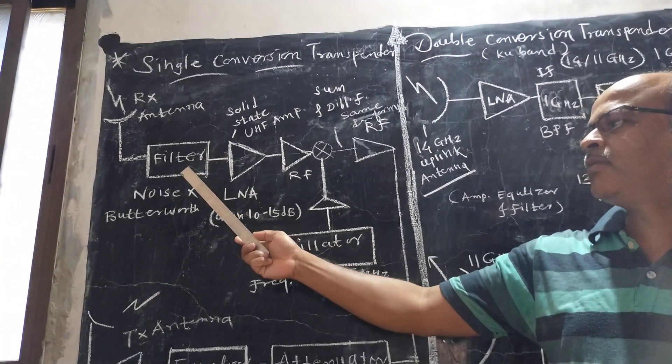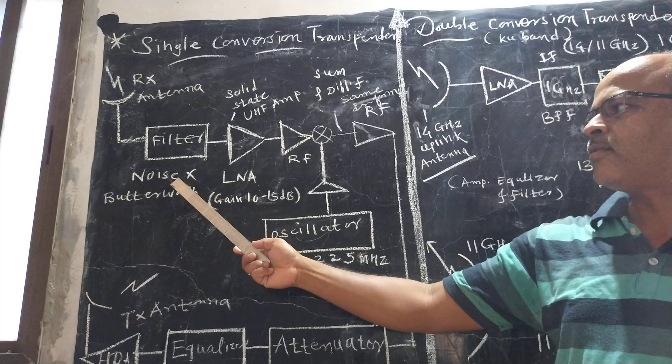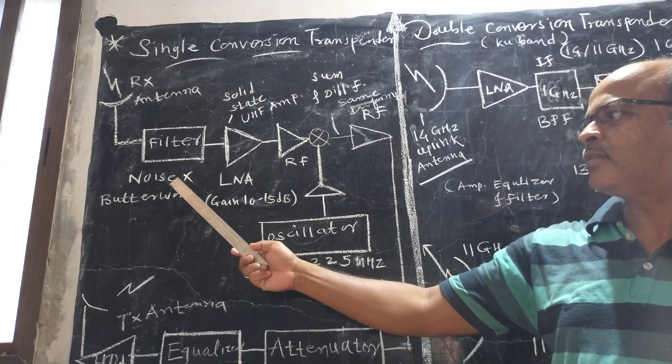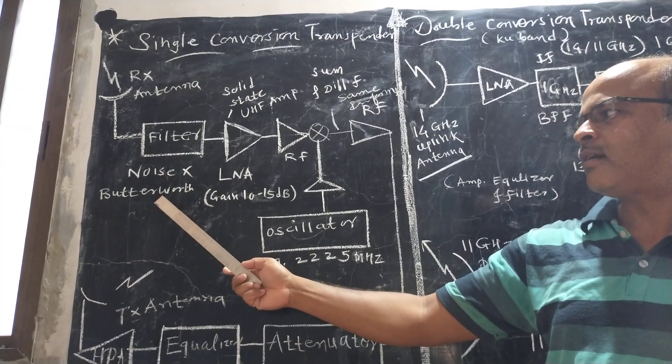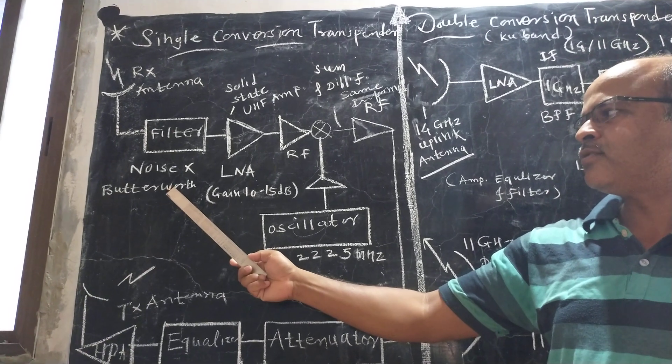The receiving antenna receives the uplink frequency which is given to the filter. The filter cancels the noise, and generally a Butterworth or Chebyshev filter is used.